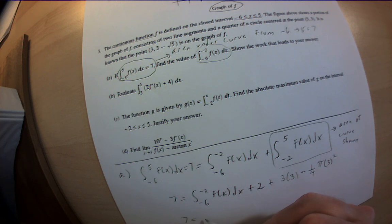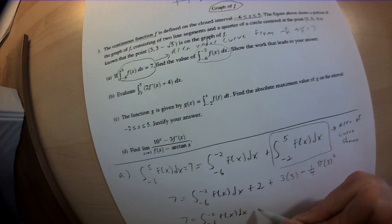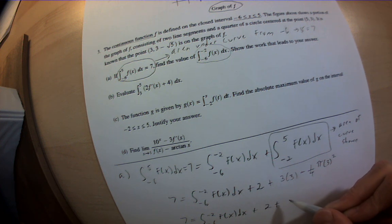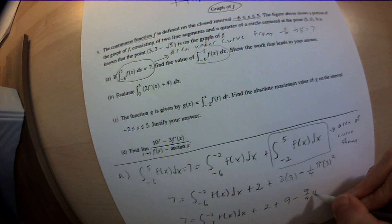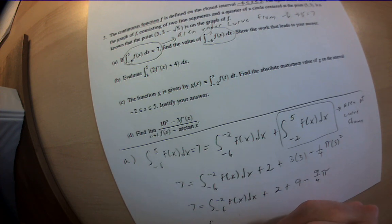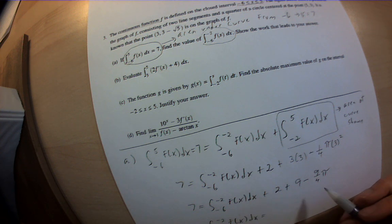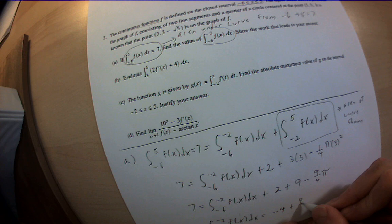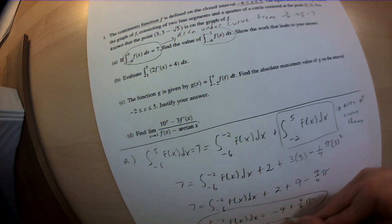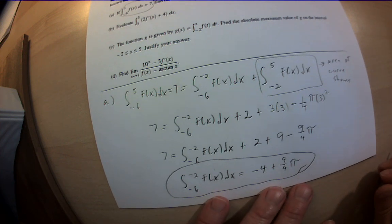So I'm going to be at 7 equals the integral from negative 6 to negative 2 of f(x) dx, the thing I'm trying to find, plus 2, plus 9 minus 9 fourths π. So if I rearrange things, what they're looking for, the integral from negative 6 to negative 2 of f(x) dx equals, and that's 11, 7 minus 11 is negative 4, plus 9 fourths π. That's the answer to part A.